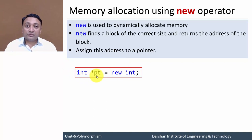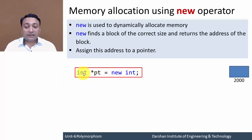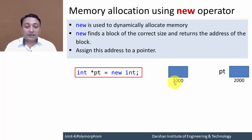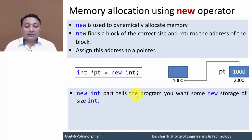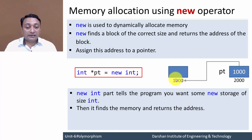Here is a pointer variable used to store the address of a memory block assigned by the new operator. When you write this statement, new will allocate a memory block of size integer — two bytes with some address — and assign it to pt. The new operator occupies a block of size integer, allocates it, and returns this address to the pointer. In this case it returns address 1000, stored in the pointer variable.